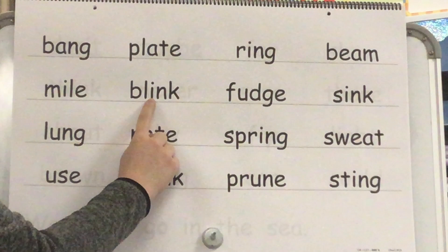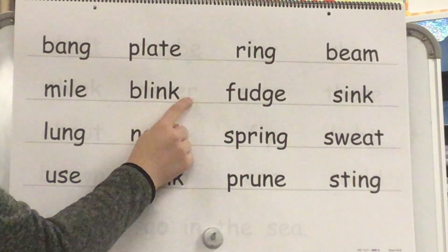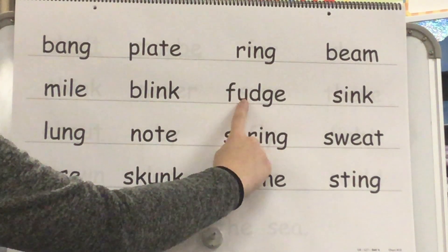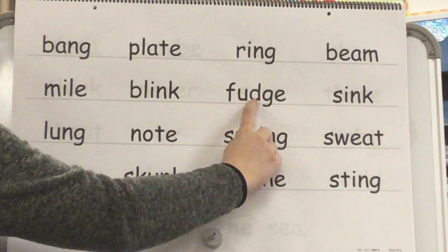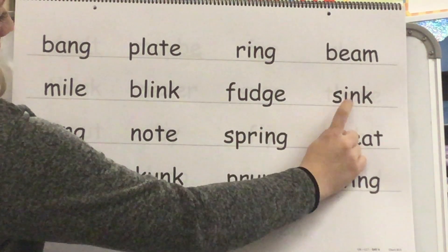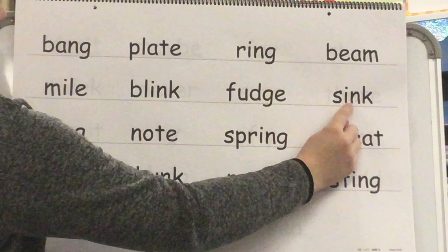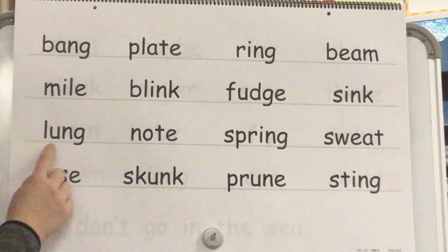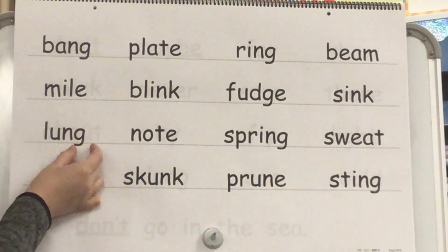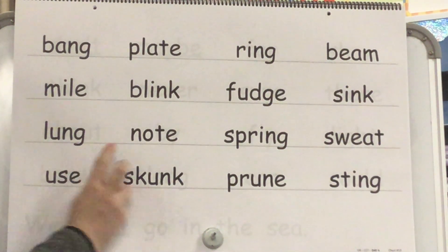Sound? I. Sound? Nk. Blend? Bl-ink. Word? Blink. Sound? U. Blend? F-u-j. Word? Fudge. Sound? I. Sound? Nk. Blend? S-ink. Word? Sink. Sound? U. Sound? Nn. Blend? Lung. Word? Lung.